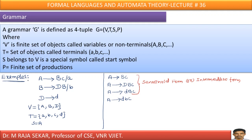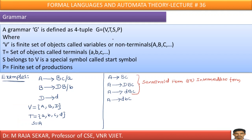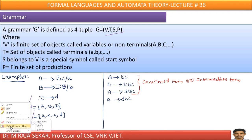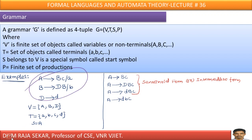S means start symbol. This grammar starts with A, therefore S equals A. Since it has all the properties of grammar — V, T, S, and P — with five productions total, I can treat this as a grammar.